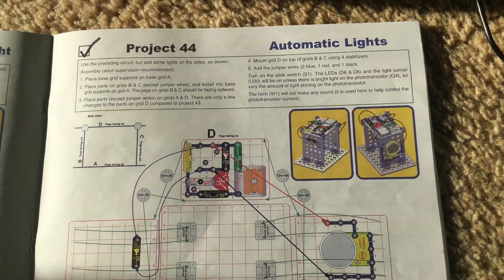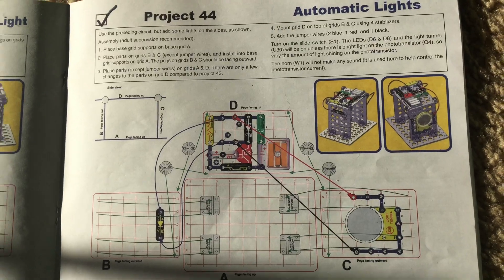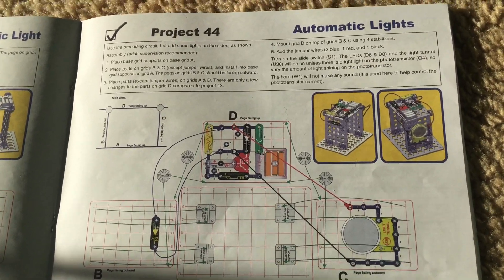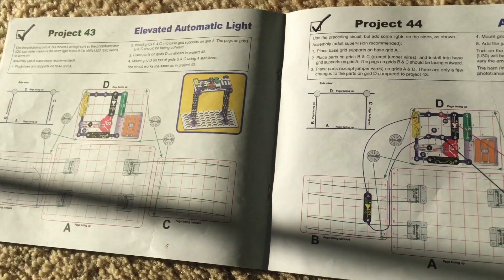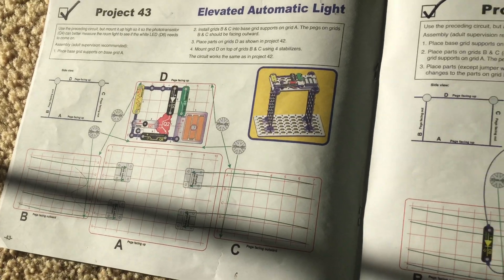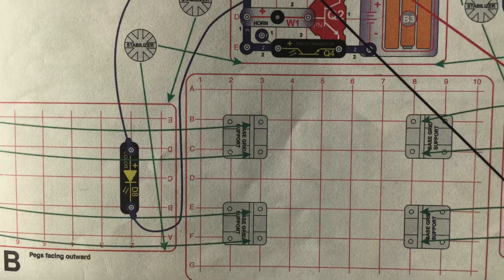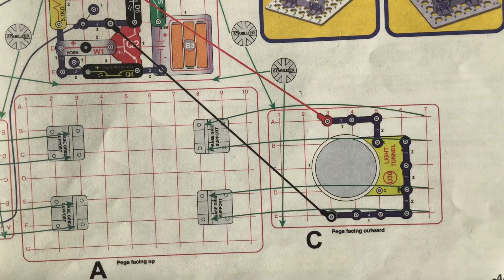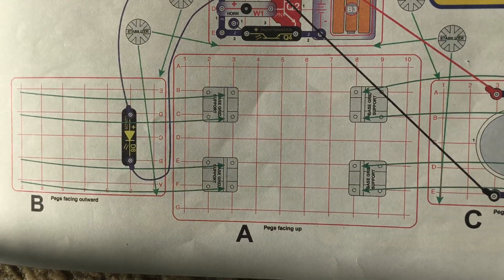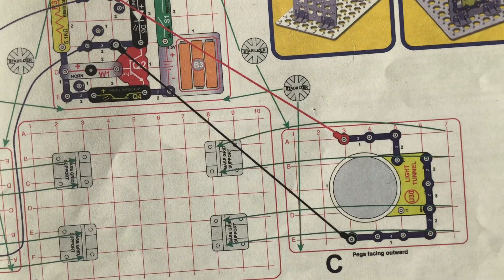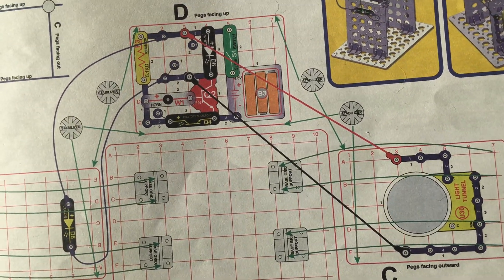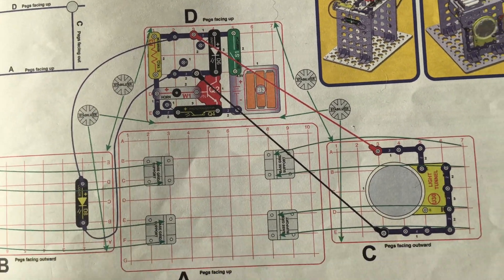Project 44, Automatic lights. We are going to use the same circuit as in Project 43, but we will make some modifications. We will be adding other lights to the smaller vertical grids and connect them to the main circuit using the jumper wires.